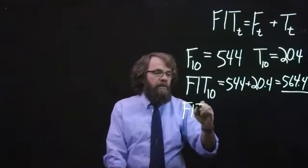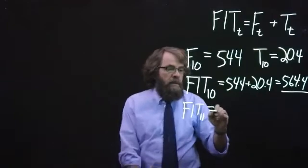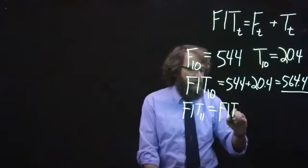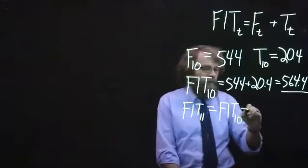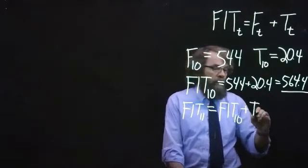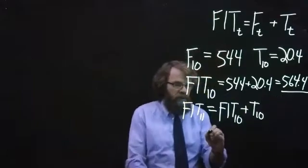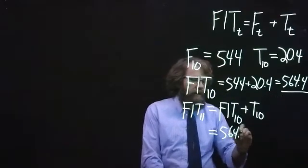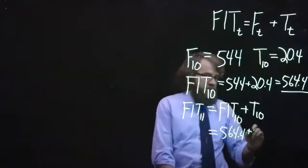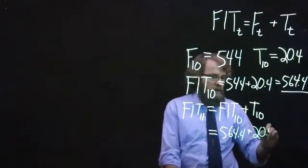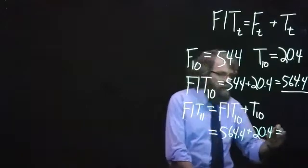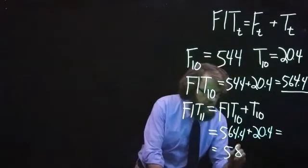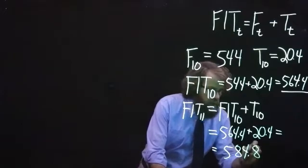To make a forecast for period 11, the easiest way is to take the answer we just came up with for period 10 and add on one more period's worth of the trend. In this case, this gives us 564.4 plus another 20.4 for a final answer of 584.8.